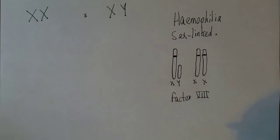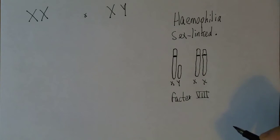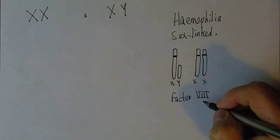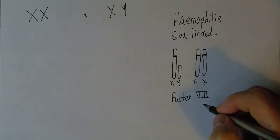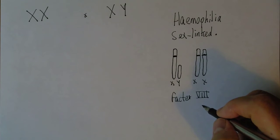Factor 8 is an essential clotting factor for the blood — it's an essential part of the coagulation cascade. Without Factor 8 present, the blood cannot clot properly.